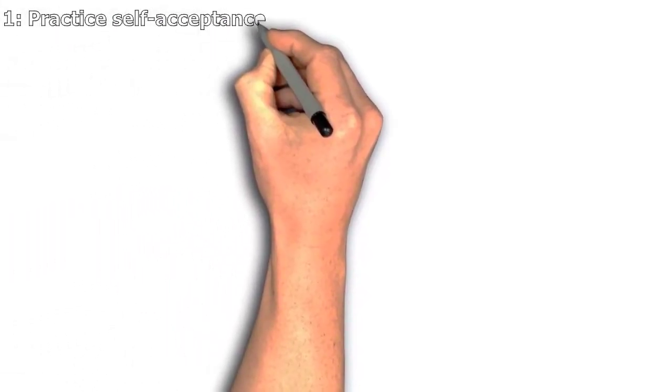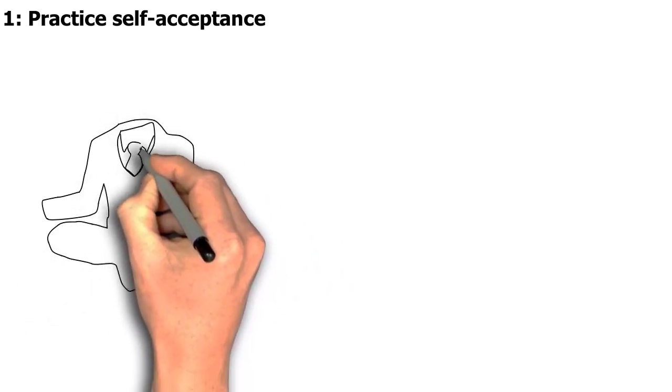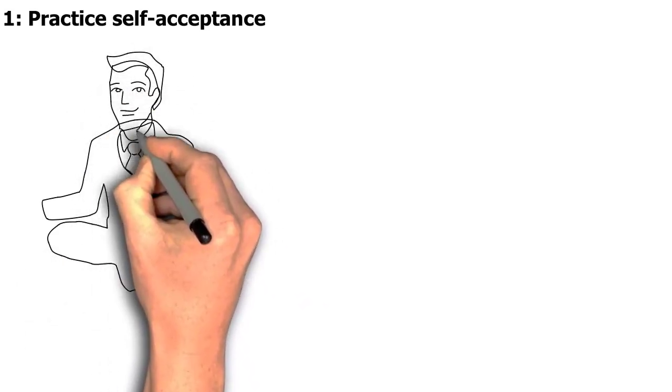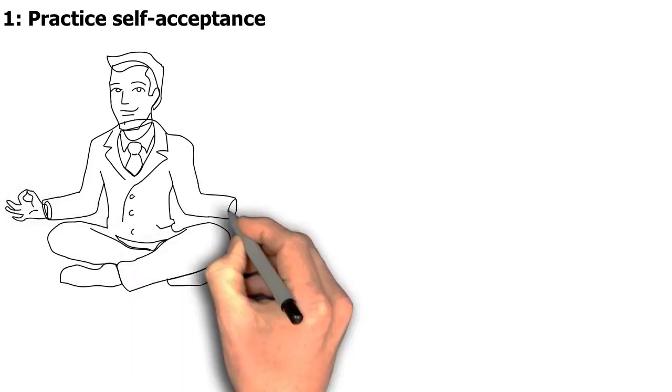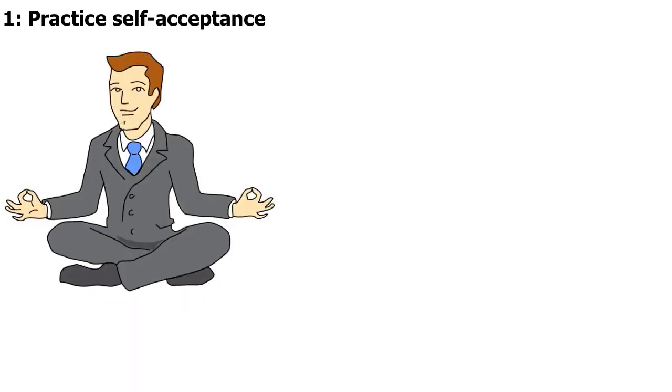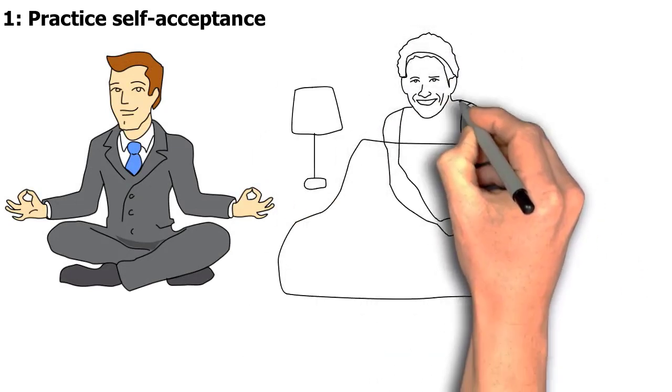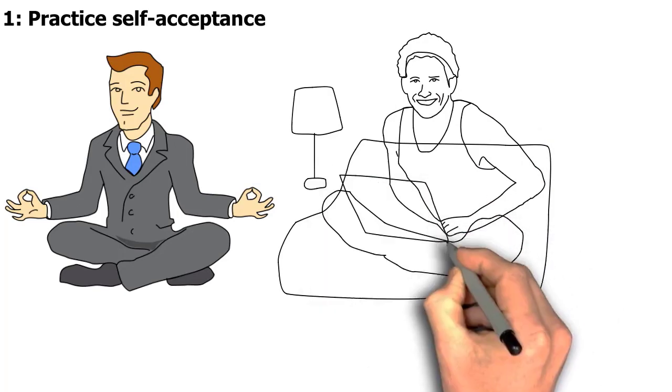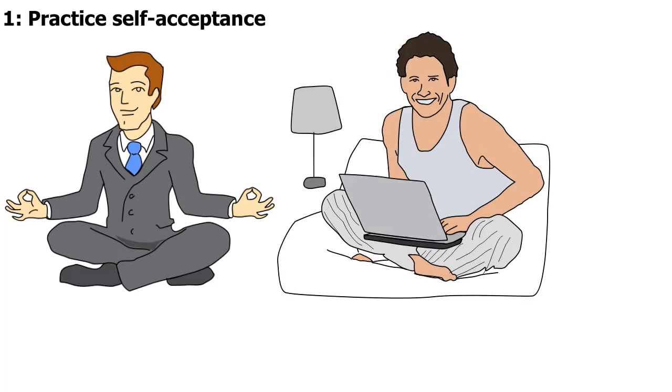1. Practice self-acceptance. One of the key factors in building self-esteem is to recognize and accept your strengths and weaknesses, rather than constantly striving for perfection. This means acknowledging and accepting your flaws and imperfections, and not judging yourself harshly for them. Instead, try to focus on your unique qualities and the things that make you special. Self-acceptance can help you to feel more confident and comfortable in your own skin, and to have a more positive and realistic view of yourself.